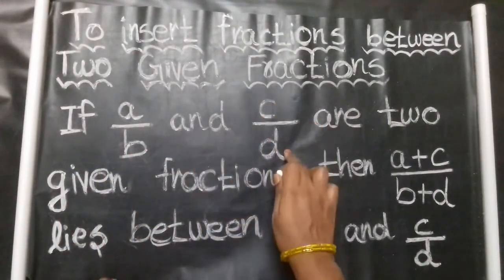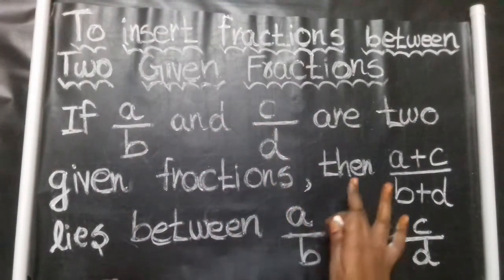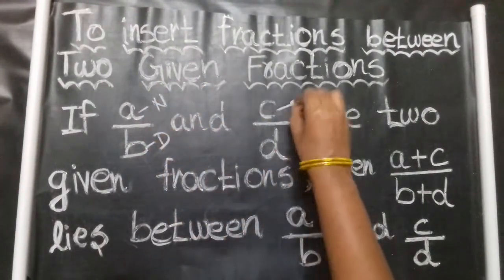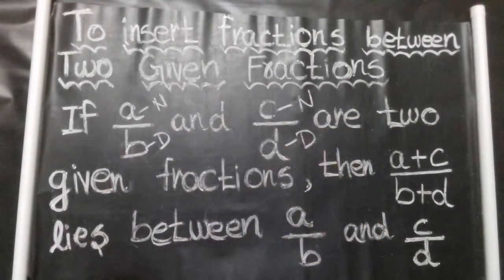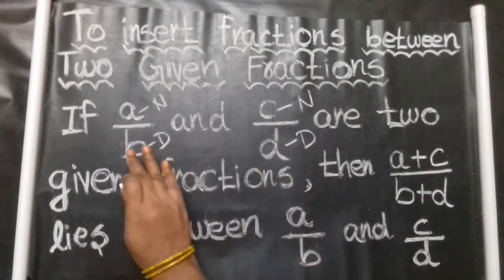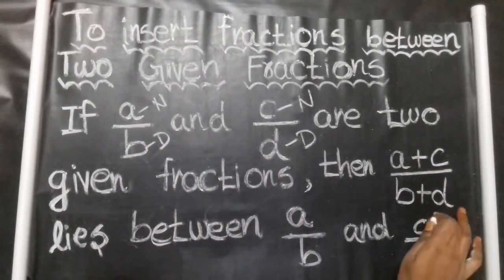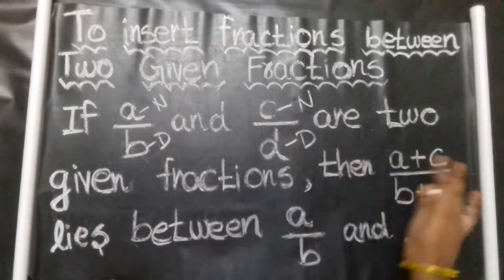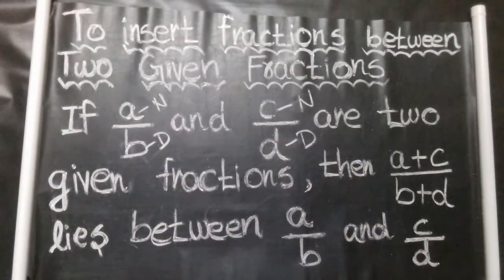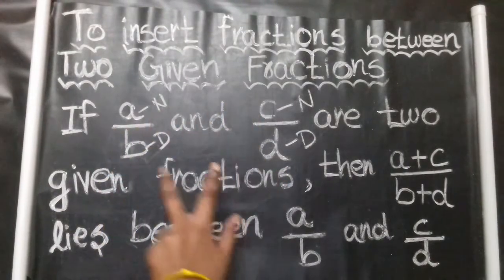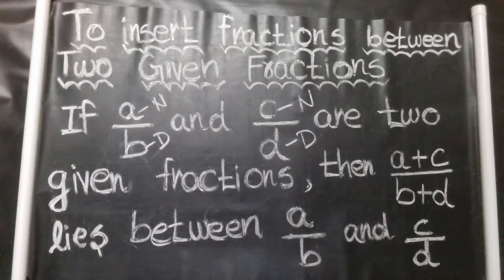If a/b and c/d are two given fractions, then the fraction formed between them has numerator obtained by adding the numerators, and denominator obtained by adding the denominators. So (a+c)/(b+d) lies between a/b and c/d.